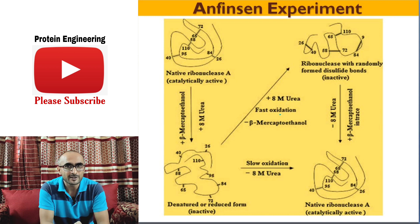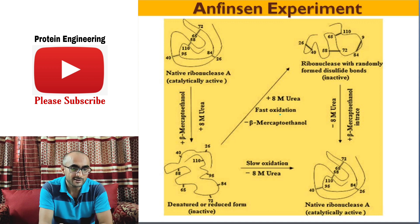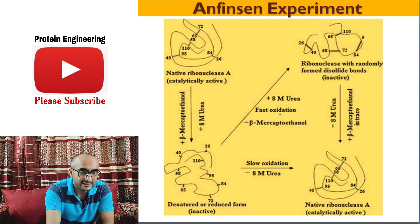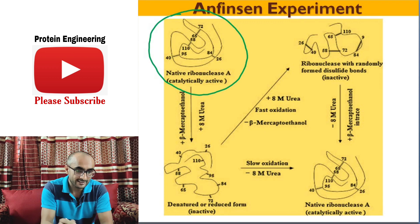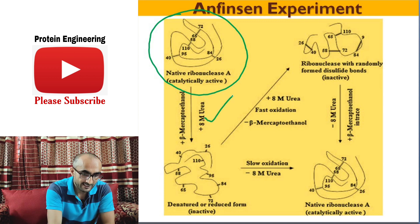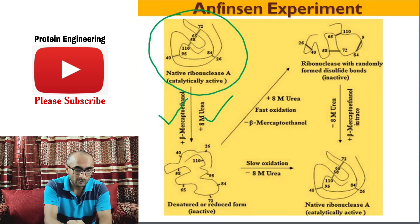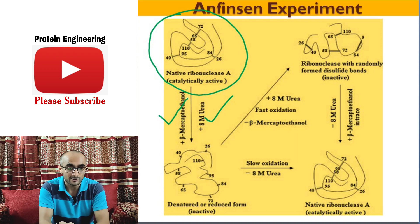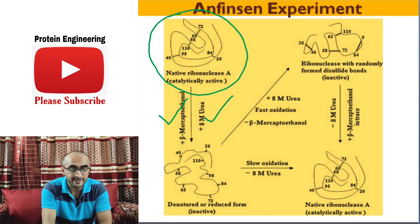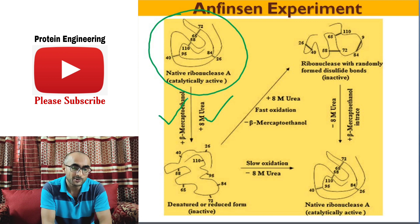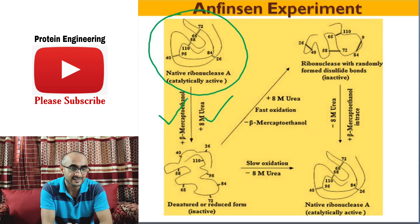Anfinsen conducted several experiments. He took ribonuclease A — this 124 amino acid long RNase A which is catalytically active — and treated it with 8 molar urea and beta-mercaptoethanol, converting it to an inactive state. The 8 molar urea caused complete unfolding of the protein, and beta-mercaptoethanol broke down all four disulfide bonds, leading to complete denaturation of the protein.